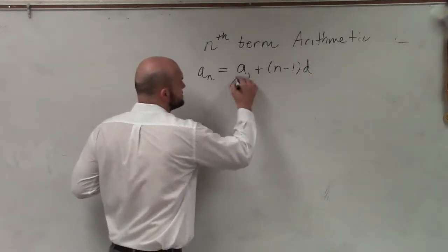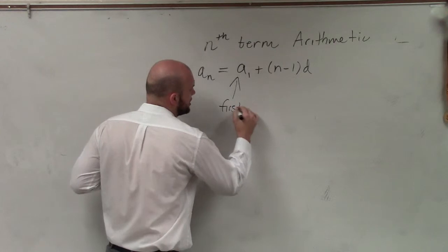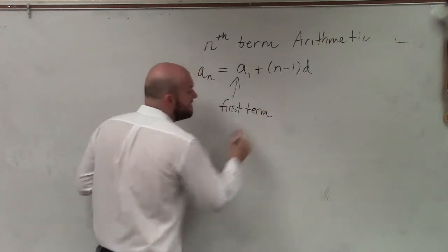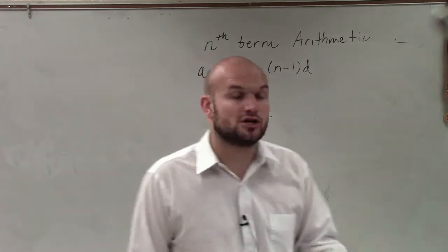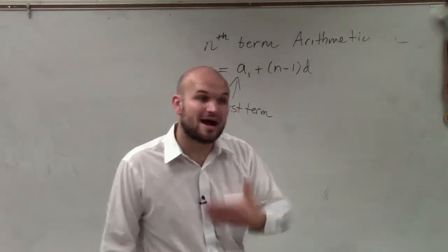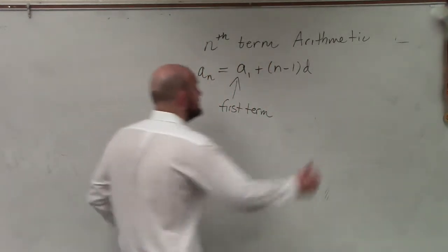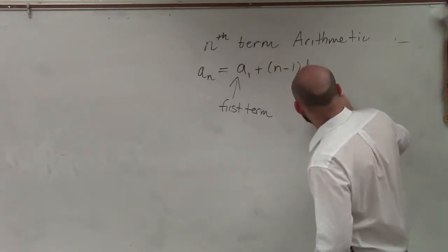So a sub 1 is going to be the first term. So to find any number or any value, you have to know that first term or you have to be able to figure out what that first term is. D is going to represent the common difference.